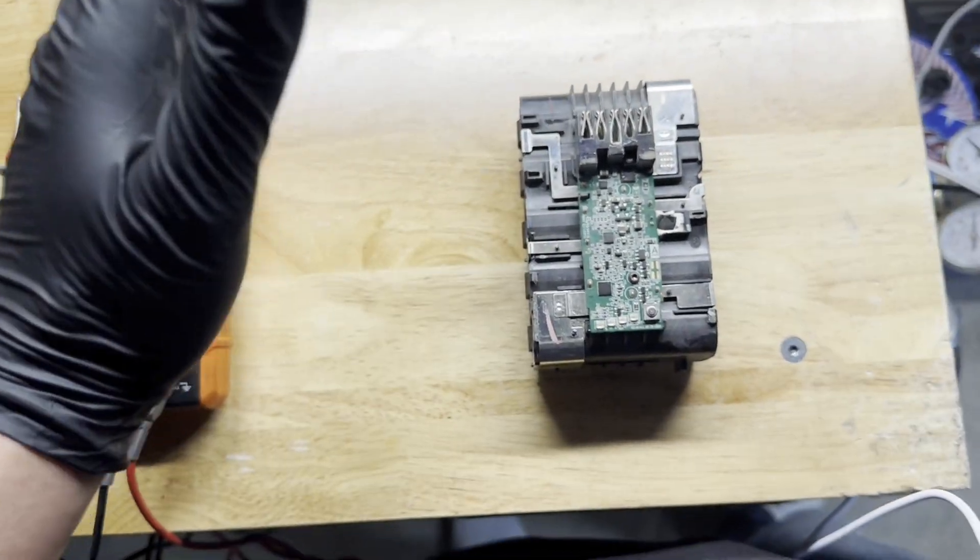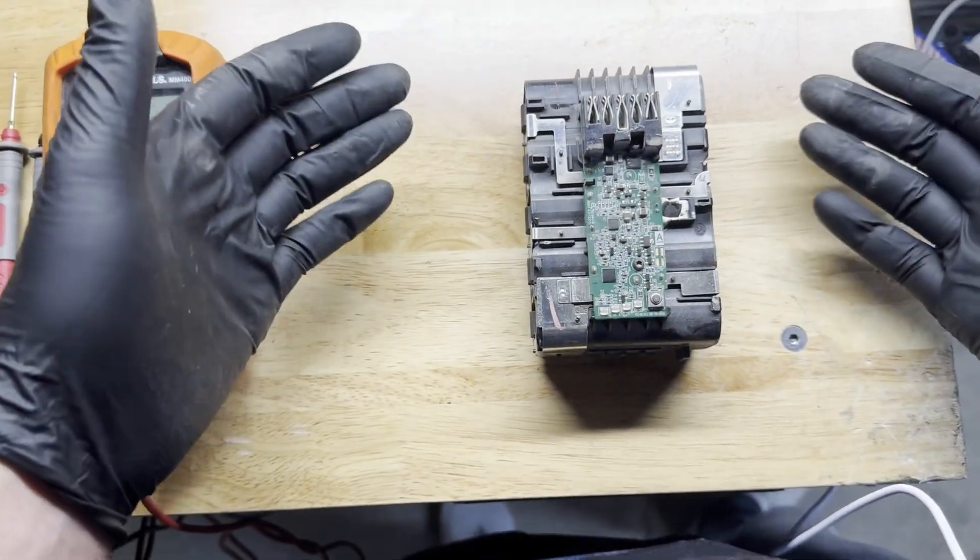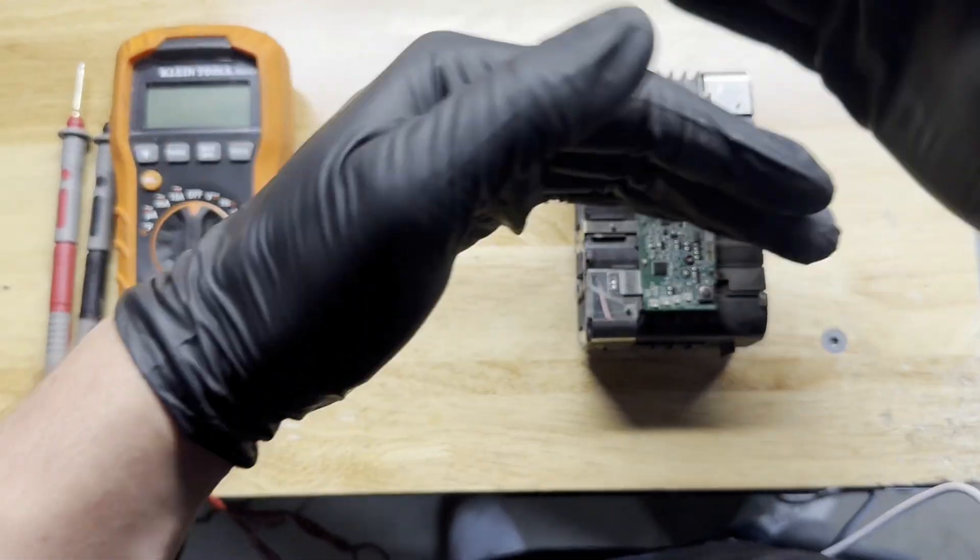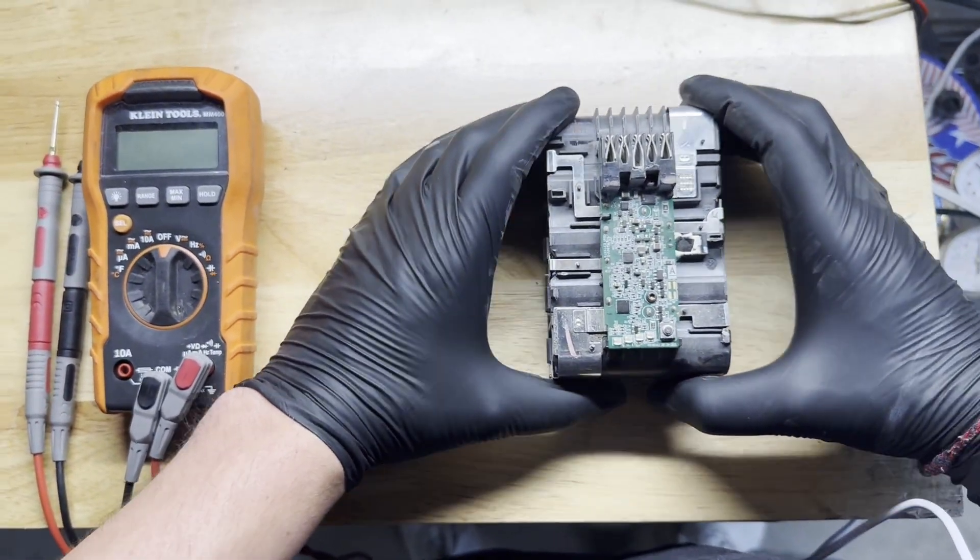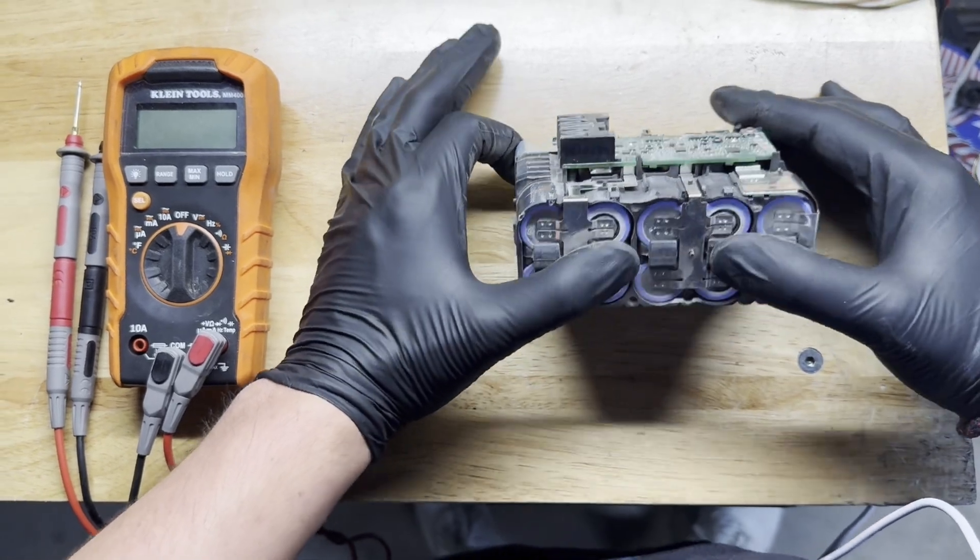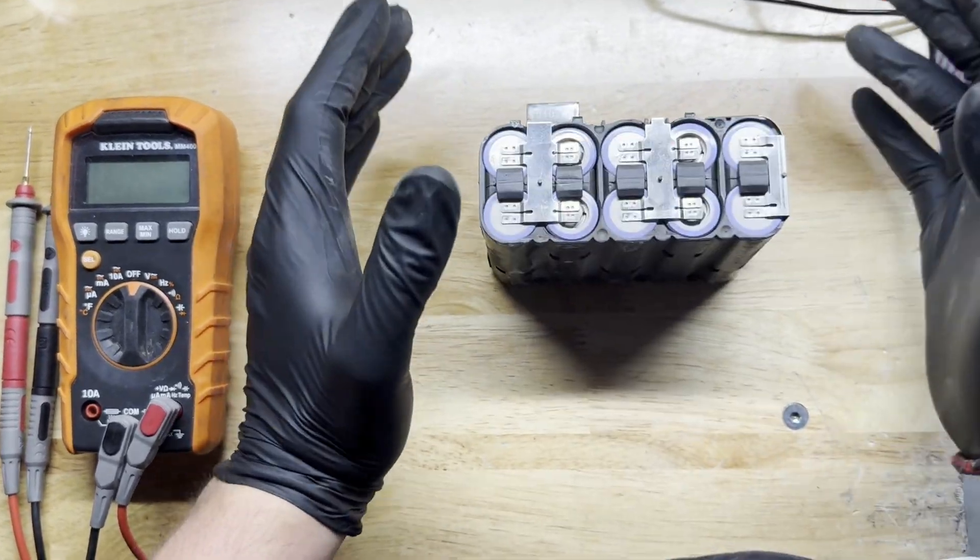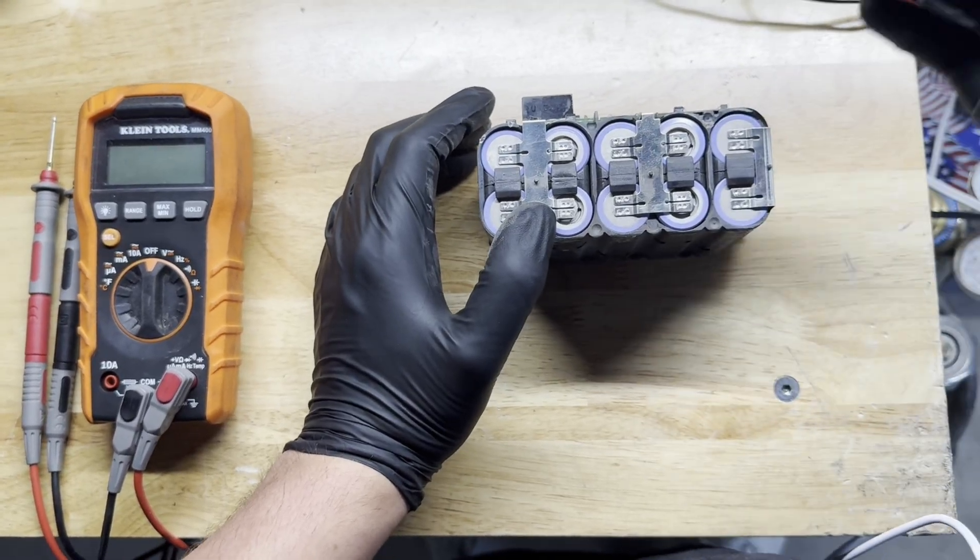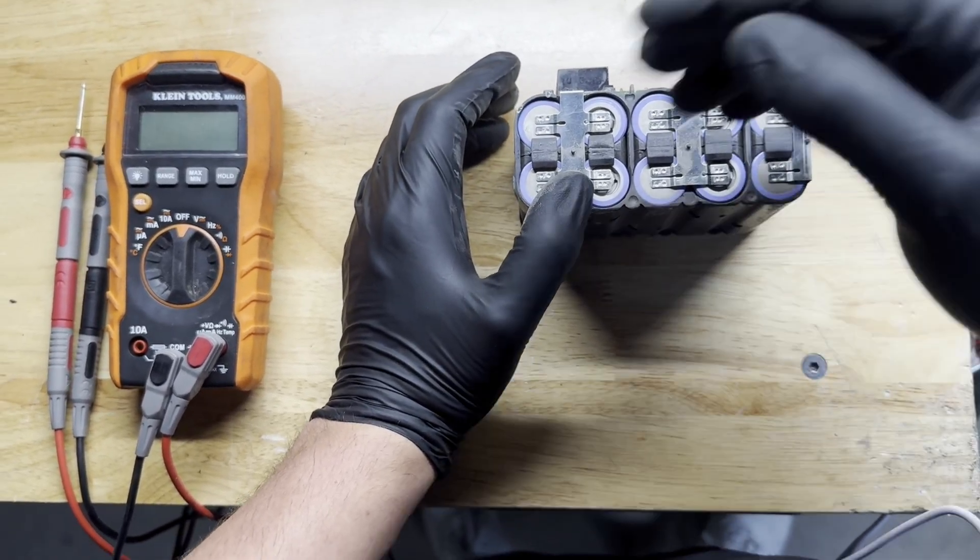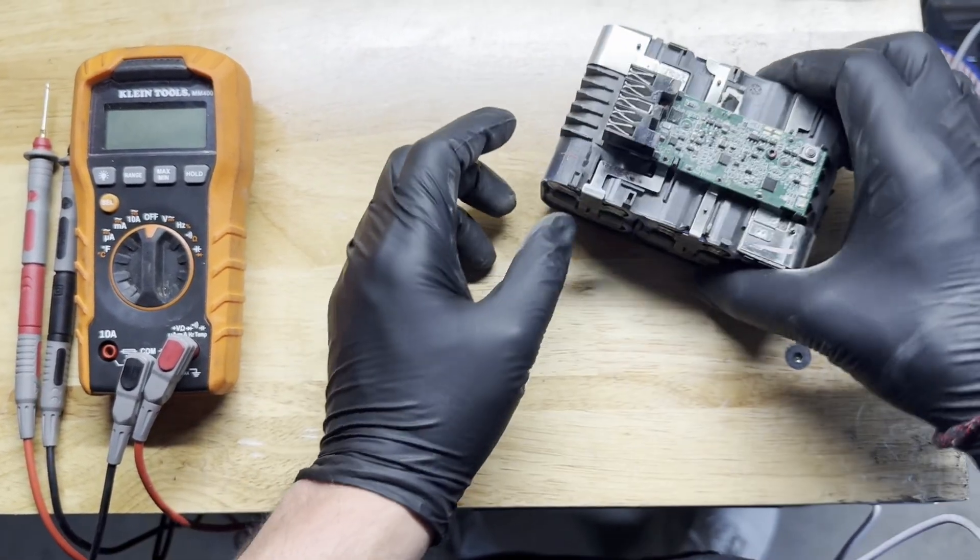And so what the battery management system does is it keeps it within that happy range of the battery and makes sure that it operates over and over. You deplete it, you charge it, you deplete it, and it's within that happiness range so the battery doesn't die and essentially kill itself. Batteries, however, are a crapshoot. So you can make one and it functions well, but it'll die a little quicker than others. And so this is where this is kind of coming into play.